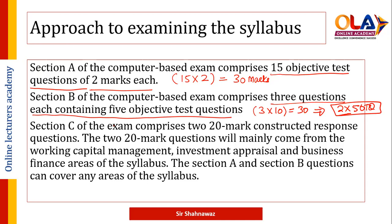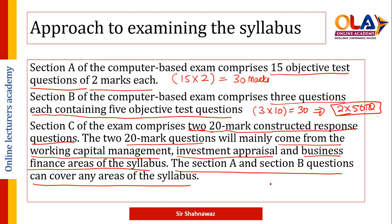Section C of the exam comprises two questions worth 20 marks each — constructive response questions — for which you get Excel and Word in the exam. The two 20-mark questions mainly come from working capital management, investment appraisal, and business finance areas. It is a common practice that one Section C question always comes from investment appraisal, making it one of the most important topics of FM. Strong calculation and theoretical knowledge of investment appraisal is essential to pass.